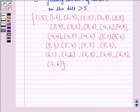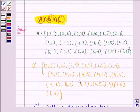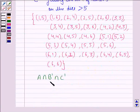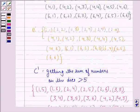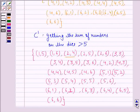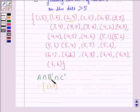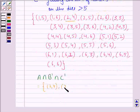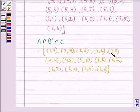Now what we have to find is the event A intersection B dash intersection C dash, that is A intersection complement of B intersection complement of C. That means we have to take out all those sample points which are common to these three sample spaces. On inspection we see that (2,4) is there in all three sample spaces. So the first sample point for A intersection B dash intersection C dash would be (2,4). Similarly we have (2,5), (2,6), (4,2), (4,3), (4,4), (4,5), (4,6), (6,1), (6,2), (6,3), (6,4), (6,5), (6,6).